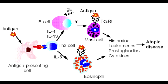Type 1 Hypersensitivity Reaction develops rapidly after antigen exposure because of the preformed antibodies. The mnemonic to remember Type 1 Hypersensitivity Reaction is just to remember 'first and fast' — it's the first type of hypersensitivity reaction and it's fast because it causes anaphylaxis.